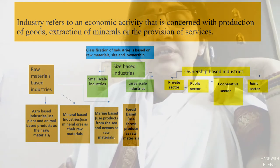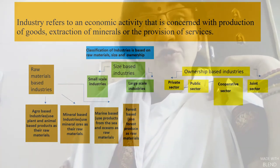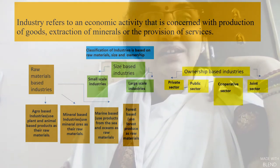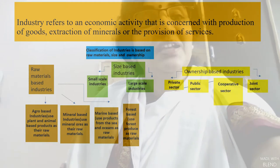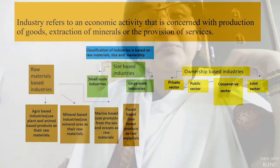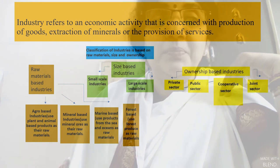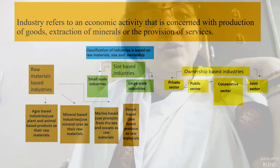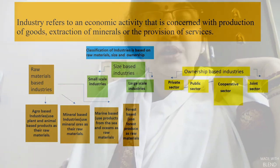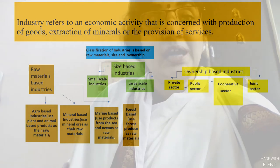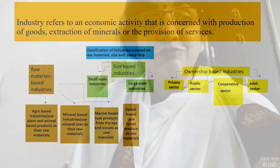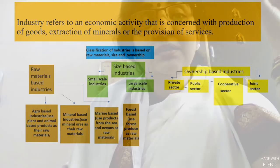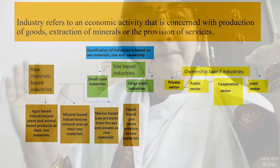Did you know that India was the third largest producer of coal and the fourth largest producer of iron ore in the world last year? Moving on, the marine-based industry is the third type under the raw materials classification. Whether it's cod liver oil capsules we use or the seafood that is used as a primary source of food by many — these are produced by the marine-based industry.